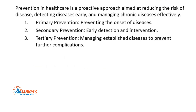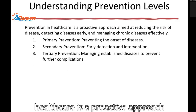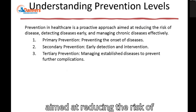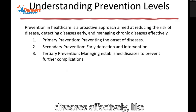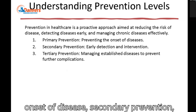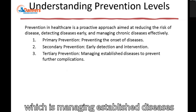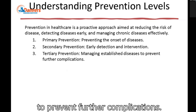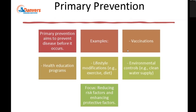So what is prevention of care? Prevention in healthcare is a proactive approach aimed at reducing the risk of disease, detecting disease early, and managing chronic diseases effectively — like primary prevention, which prevents the onset of disease; secondary prevention, which is early detection and intervention; and tertiary prevention, which is managing established diseases to prevent further complications. So let's look at them in depth individually.